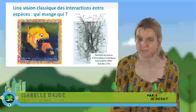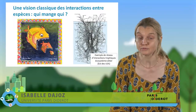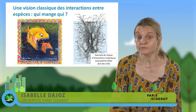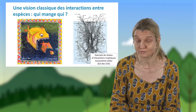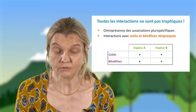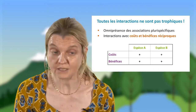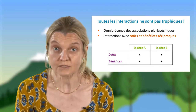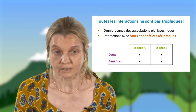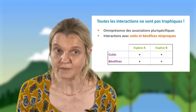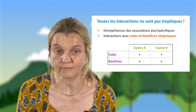Je vais vous parler des interactions entre espèces qui ne sont pas des interactions basées sur qui mange qui, comme vous le voyez sur ce dessin. Ces interactions de qui mange qui peuvent être très complexes, comme vous le voyez sur le schéma à droite de cette diapositive. Toutes les interactions dans un écosystème ne sont pas basées sur qui mange qui — il y a toute une diversité d'interactions. Ces interactions qui ne sont pas basées sur qui mange qui sont omniprésentes dans les écosystèmes.